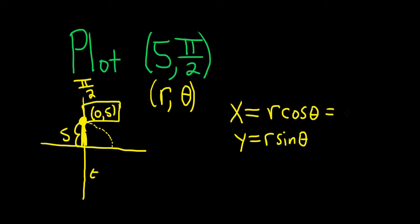So r is 5. So 5 cosine pi over 2. The cosine of pi over 2 is 0, so you get 5 times 0, which is 0.